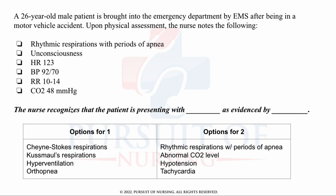This is a drop-down style question and will test your knowledge of physiological integrity. A 26-year-old male patient is brought into the emergency department by EMS after being in a motor vehicle accident. Upon physical assessment, the nurse notes rhythmic respirations with periods of apnea. The patient is unconscious. Heart rate is 123, BP is 92 over 70, respirations are 10 to 14 breaths per minute, and CO2 is 48.